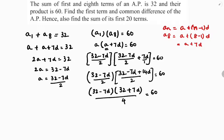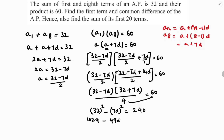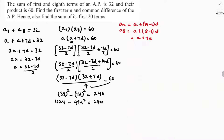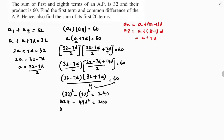Observe that the numerator is of the form (a − b)(a + b) = a² − b², so (32 − 7d)(32 + 7d) = 32² − (7d)² = 1024 − 49d². Setting this equal to 60 × 4 = 240: 1024 − 49d² = 240, which gives 1024 − 240 = 49d².